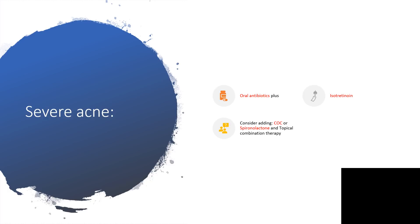Severe acne: when you have used everything that could be used for moderate acne and you are not winning, use oral antibiotics plus Accutane. You can consider combined oral contraceptives or spironolactone, and use a combination of topical agents like benzoyl peroxide and adapalene — that is Tactuo — or benzoyl peroxide and clindamycin phosphate. Know that you may use about four or five different medications because severe acne could lead to nodules, cystic formation, and scarring.